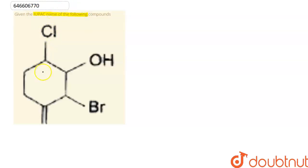In this compound on cyclohexane, we have the groups Cl, OH, Br, and doubly bonded CH2.